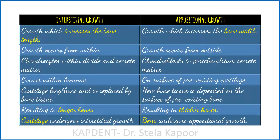Before we get into the details of the several subunits, it is important to know the difference between the interstitial and appositional types of growth. Interstitial means from within — the chondrocytes divide and secrete matrix, after which the cartilage is replaced by bone, leading to lengthening of the bone. Appositional growth means adding on the surface, which leads to deposition of new bone on the pre-existing one, resulting in thicker bones.